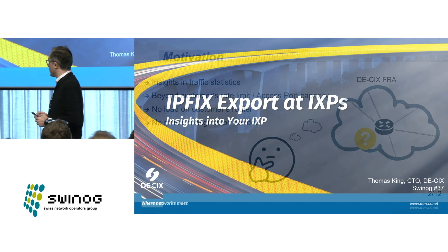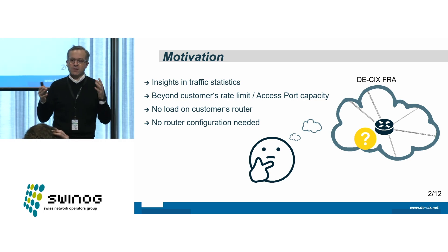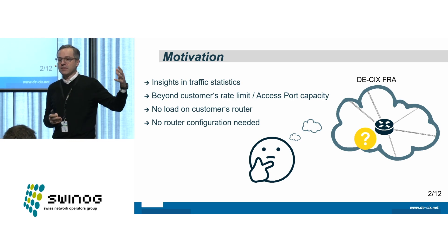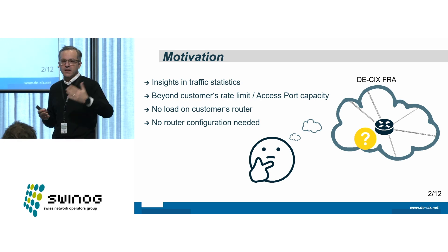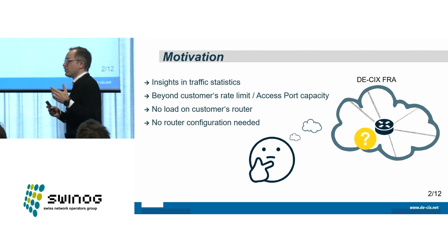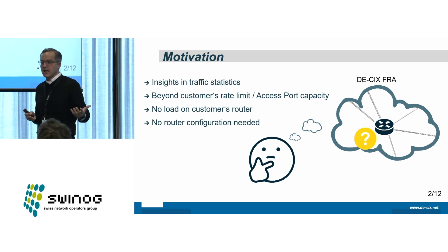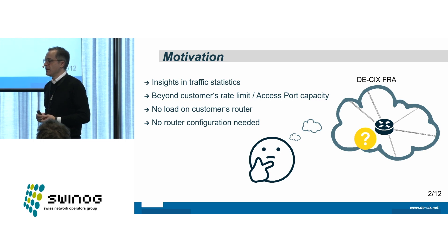Let me briefly motivate why this is helpful. If you are connected to an IXP, and most of you most probably are, it can happen that more traffic comes in than the port you have with that IXP can handle. If you have a 10G port and there's a DDoS coming in with 20 gigabits per second, you can't handle that. And you most probably can't get insight on what kind of traffic or where the traffic is coming from, so you can't easily set up countermeasures to fight that DDoS.